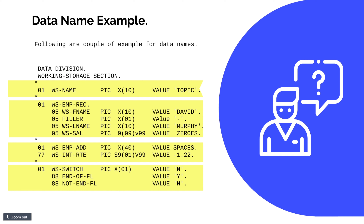Figurative constants will be explained in a separate video. In the third example, level numbers 77 and 01 are used to define individual data items. In the last example, level 88 is used for conditions. The default value of WS-SWITCH is 'N', and it is used as a boolean variable — similar to other programming languages. It can hold values 'Y' or 'N', and will be changed interchangeably in the procedure division based on whether a file has records or not.